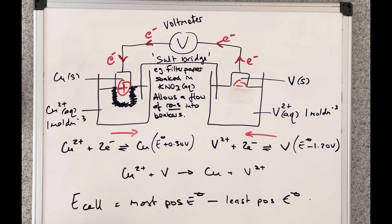So the final thing I want to mention in the video is how would you calculate the voltage of this cell. So that's what we would call the E cell. So we can see there I've written up E cell is equal to the most positive standard electrode potential minus the least positive one.